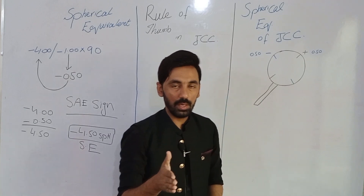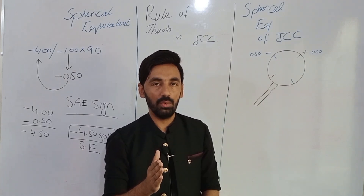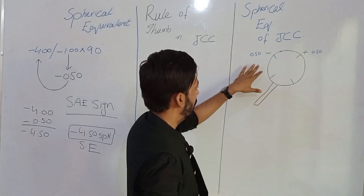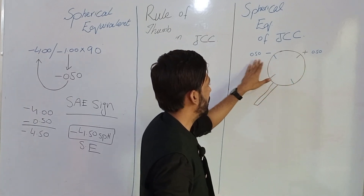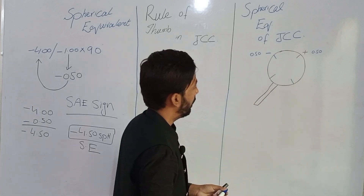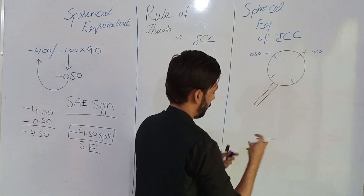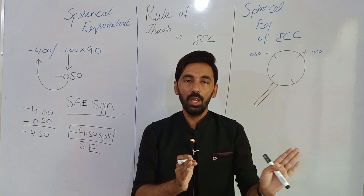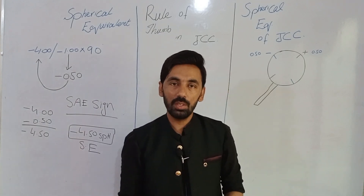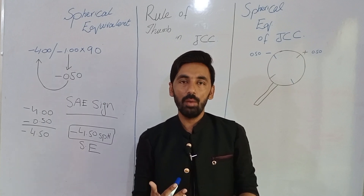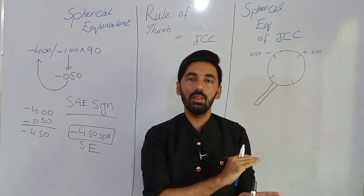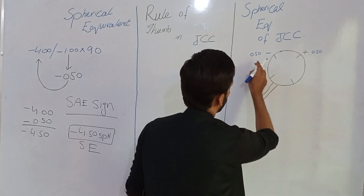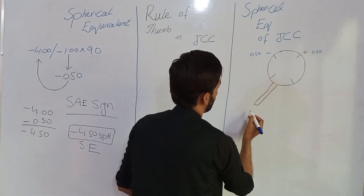The Jackson Cross Cylinder has 0.5 minus and 0.5 plus power. You know these are axis lines, and power of the cylinder is always 90 degrees apart from the axis meridian. So the power of the Jackson Cross Cylinder is 0.5 minus and 0.5 plus. In a JCC, the cylindrical power is always double the spherical power.